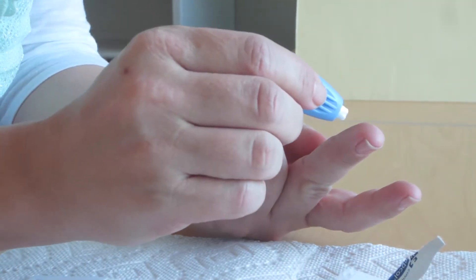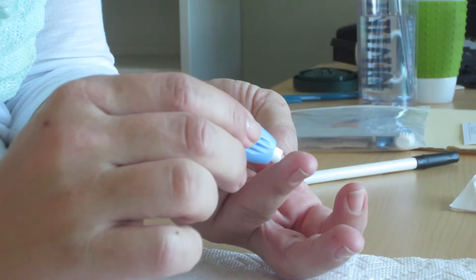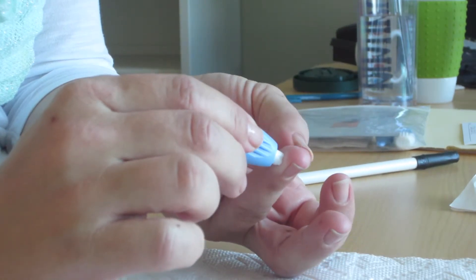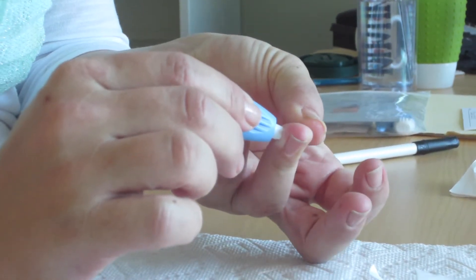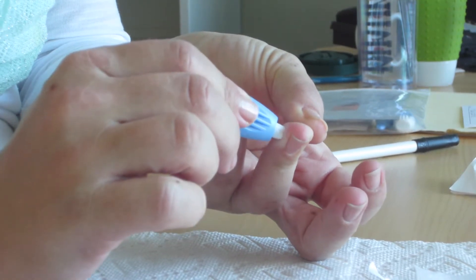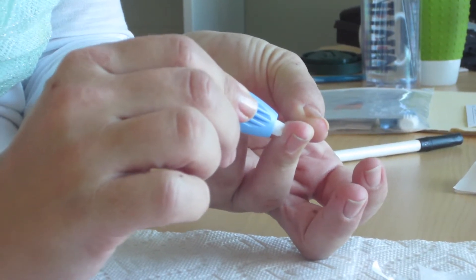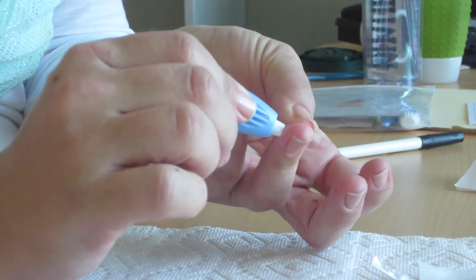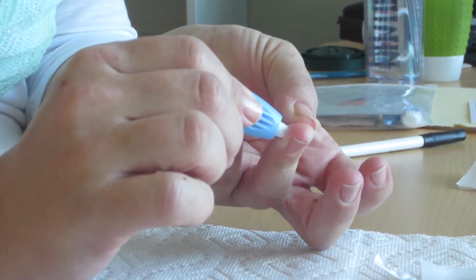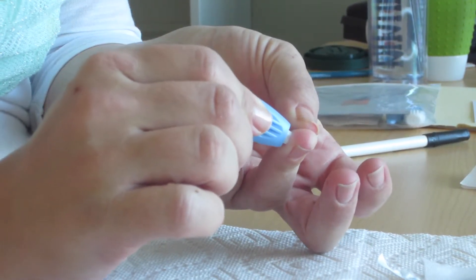Place the lancet on the fleshy inner side of the chosen finger. Bring the thumb of the chosen hand up to the tip of the chosen finger. Use the thumb to make the prick surface stretch tightly. Hold the lancet firmly against the tight portion of the finger and press down until you hear a click.